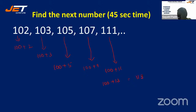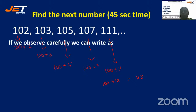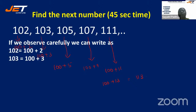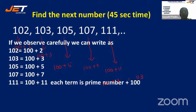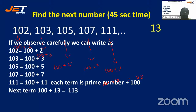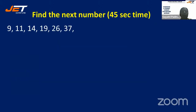The answer is 113. Now the next question: 9, 11, 14, 19, 26, 37. Find the next number. You have 45 seconds. Find the difference between consecutive terms.